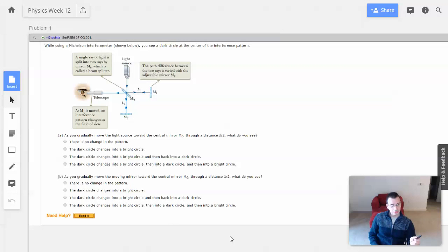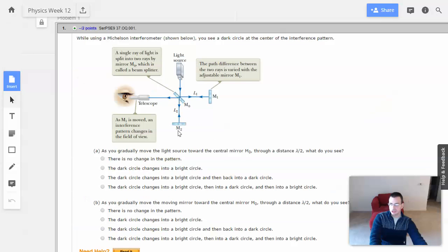Hello, week 12, problem 1. While using a Michelson interferometer, you see a dark circle at the center of the interference pattern. Okay, then it kind of goes to describe it.